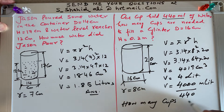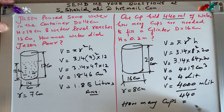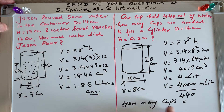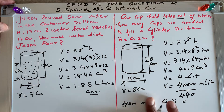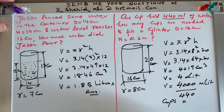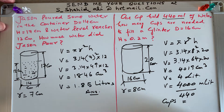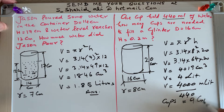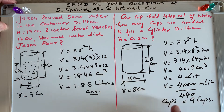Each cup holds 440 milliliters. The number of cups required is 4000 divided by 440, which equals approximately 9. So 9 cups are required.